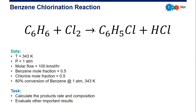The reaction is benzene plus chlorine. The products are HCl (hydrogen chloride acid) and chlorobenzene. We will perform this reaction using a stoichiometric reaction in Aspen Plus.